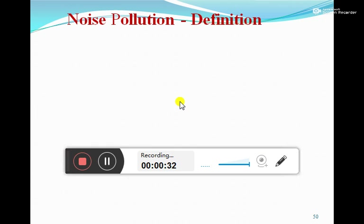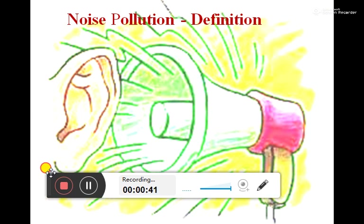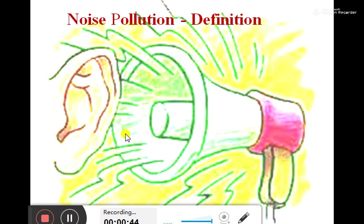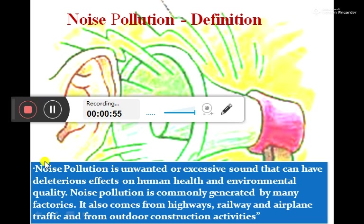So, noise pollution — definitions of course. Unwanted noise is also considered a form of pollution. Noise pollution is unwanted or excessive sound that can have deleterious effects on human health and environmental quality. It is commonly generated by many factories. It also comes from highways, railway and airplane traffic, and from outdoor construction activities.